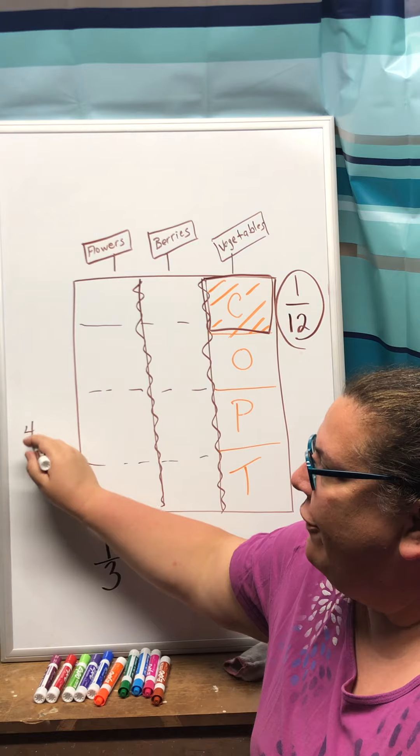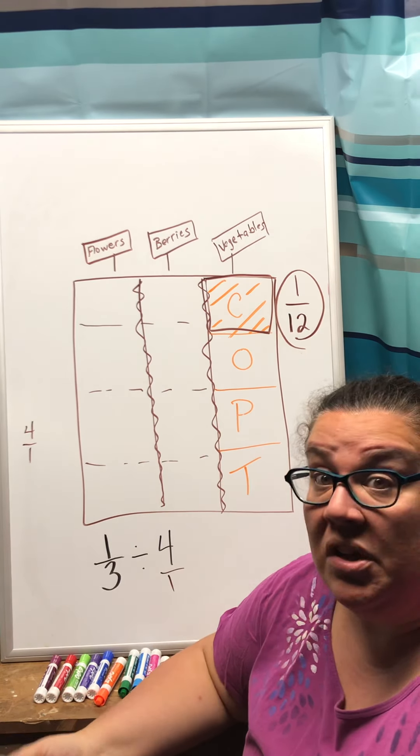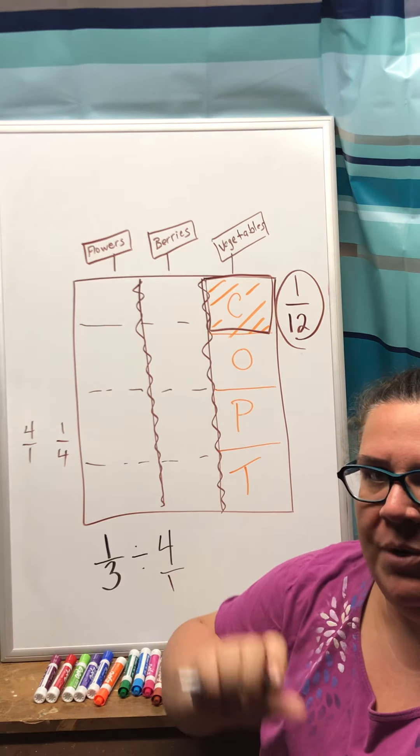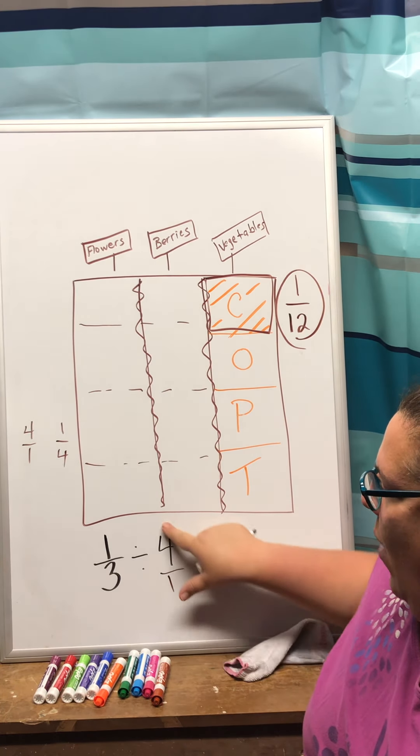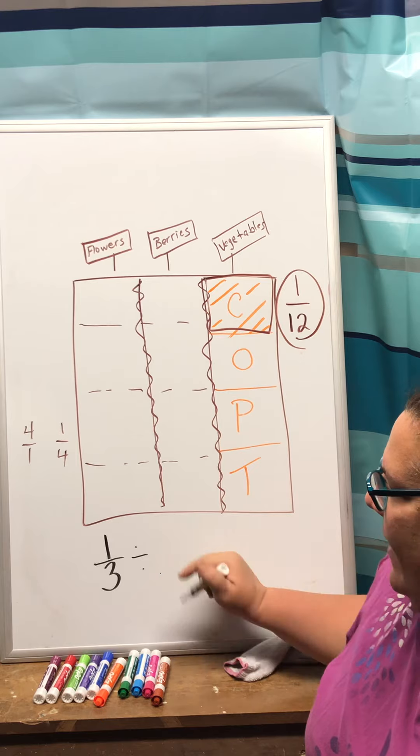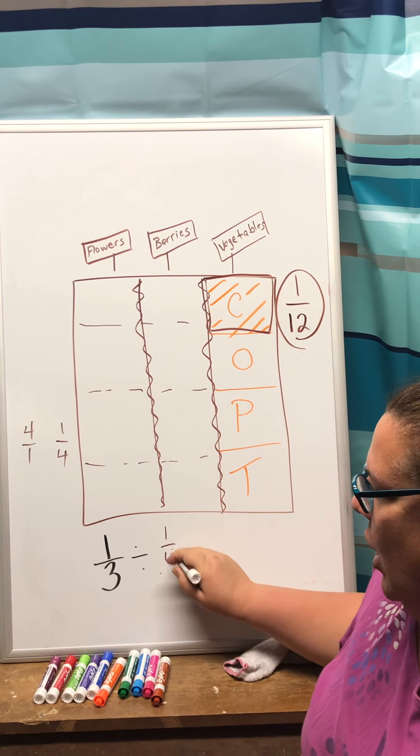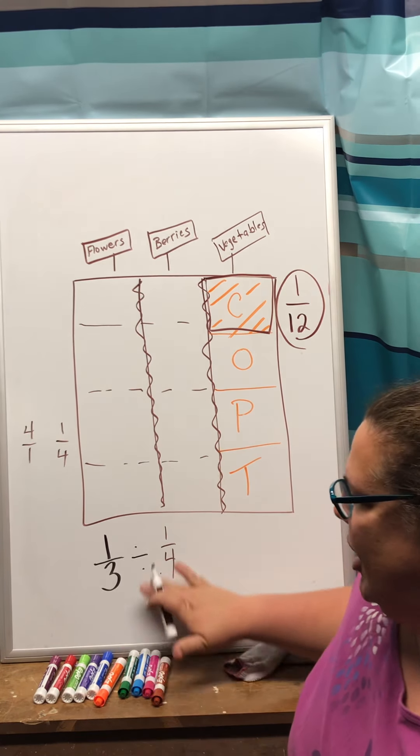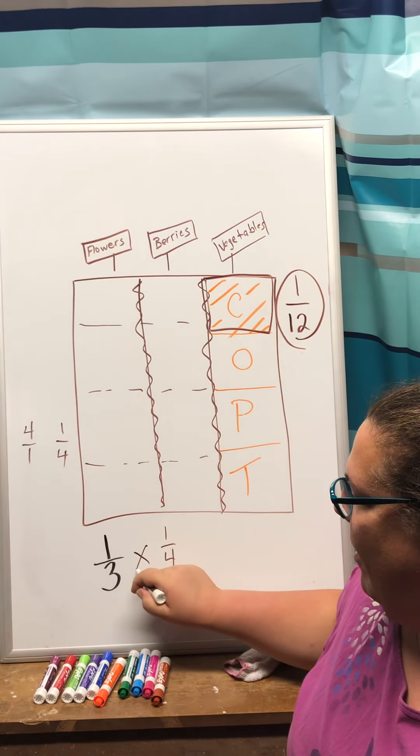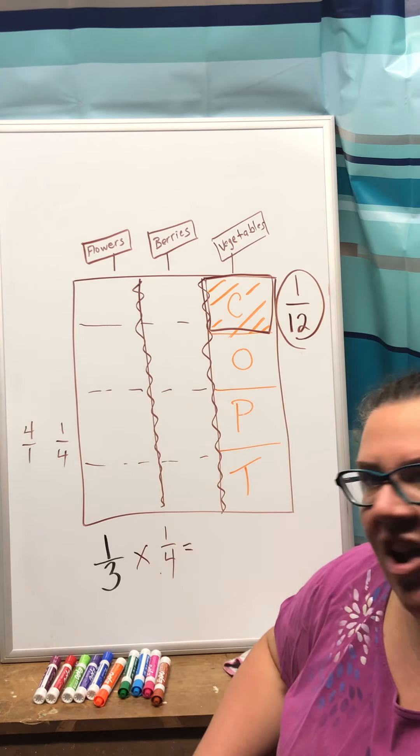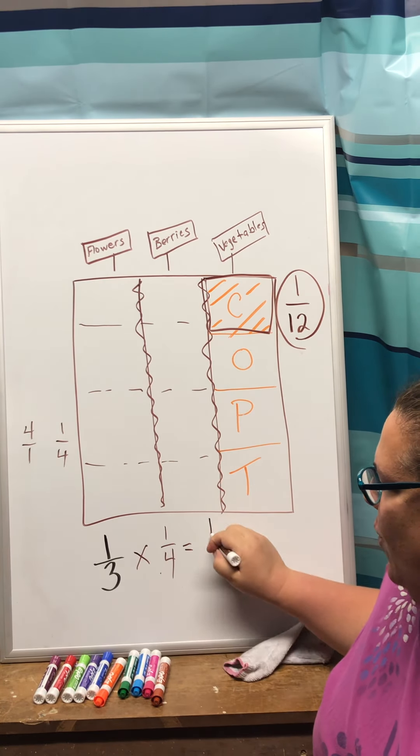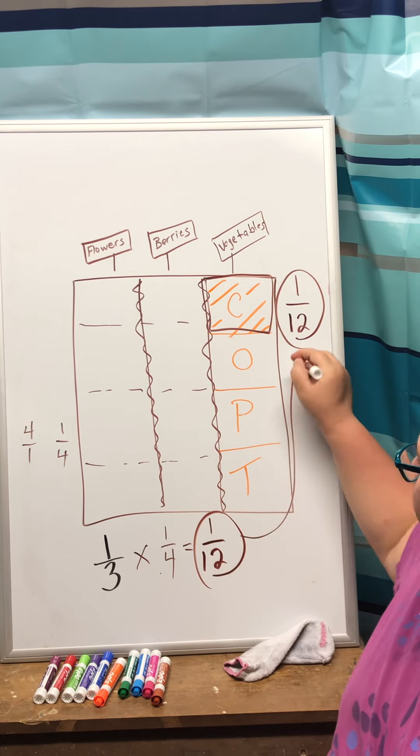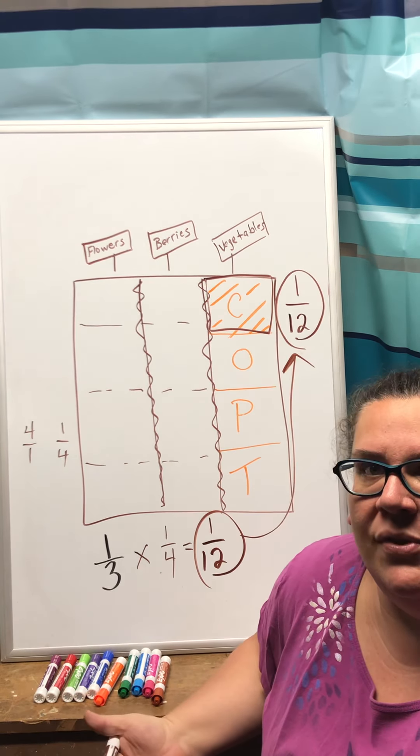So if I have a fraction 4/1 the reciprocal of that is 1/4. It's just the fraction flipped over. So once I take that fraction 4/1 and I flip it or get its reciprocal 1/4 that's when I can then change my sign from division to multiplication. So I'm going to now multiply and when I multiply across one times one is one, three times four is twelve, and that's the same answer that I got when I used the drawing.